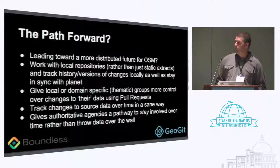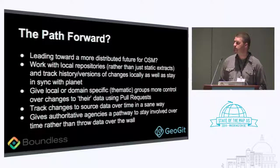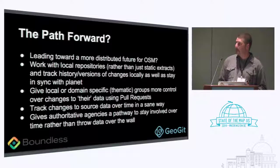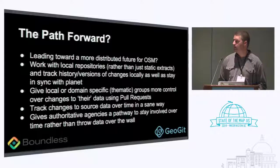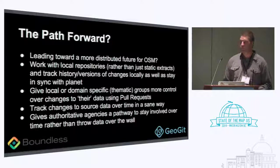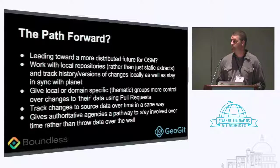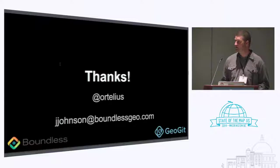We and many other people would like to work towards a more distributed future for OSM — I don't know if this is the answer, but it's one potential answer. Working with local repositories rather than static extracts, tracking history and versions of change locally while staying in sync with the planet. Giving local, domain-specific, or thematic groups more control over changes using pull requests, and being able to track changes to source data over time in a sane and easy way. The real goal for us at Boundless is to give authoritative agencies a pathway to stay involved over time rather than just throw all their data over the wall.